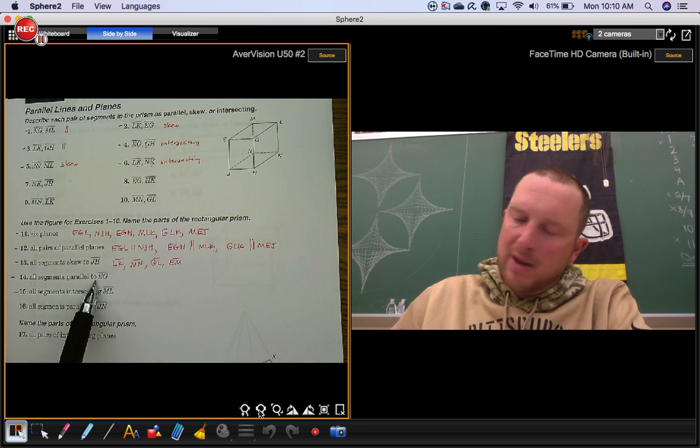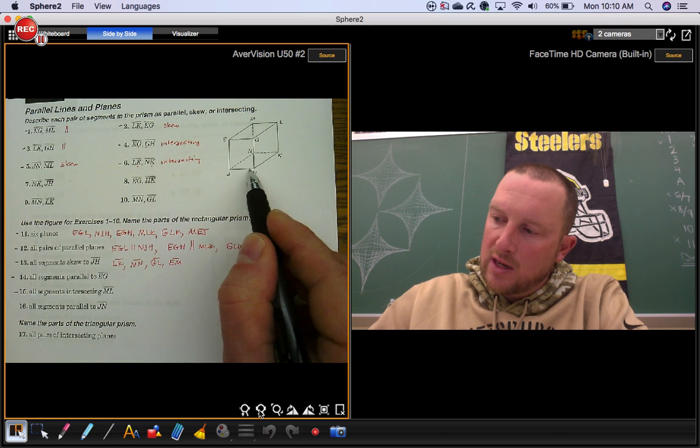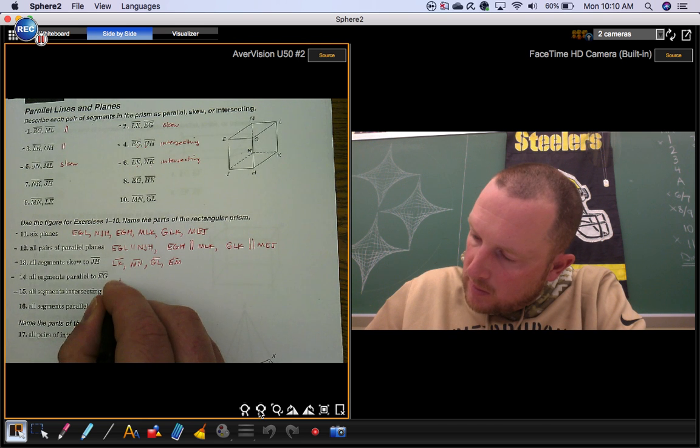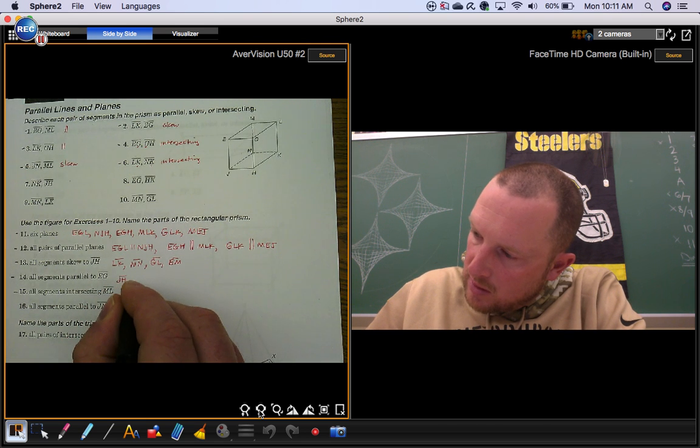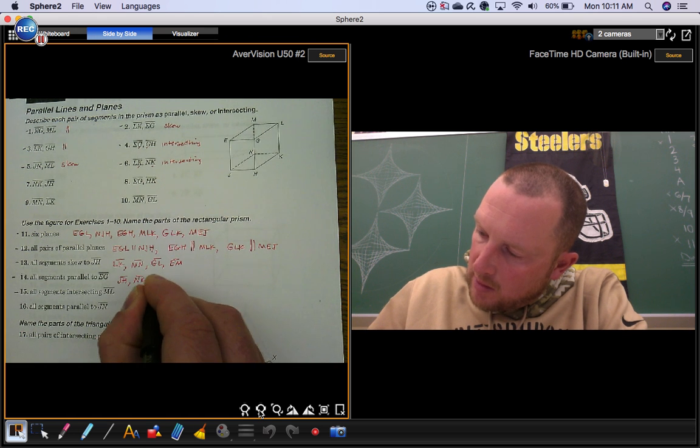All segments parallel to segment EG. There's three of them. We'll have one here, here, and here. So that's segment JH, segment NK, and segment ML.